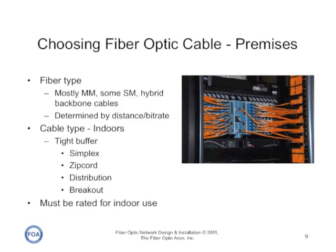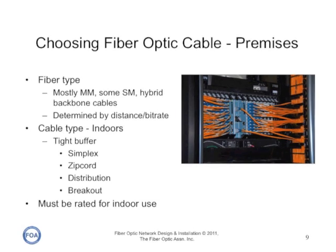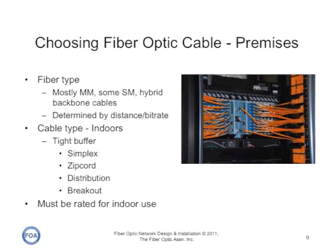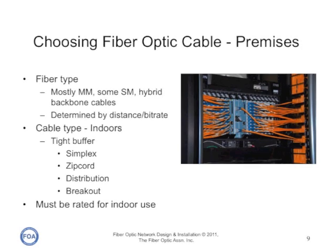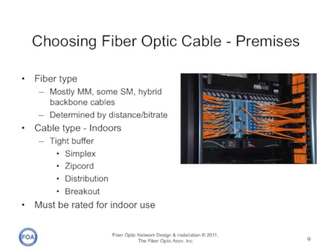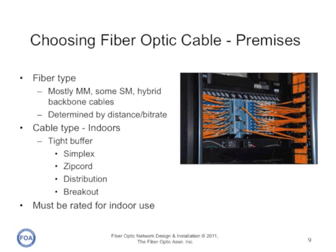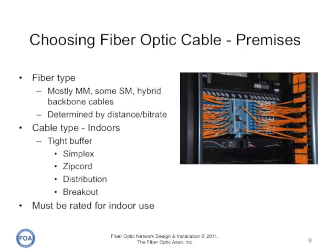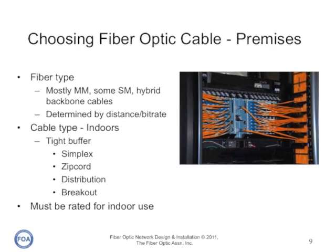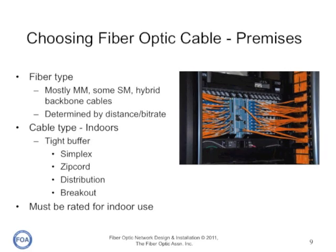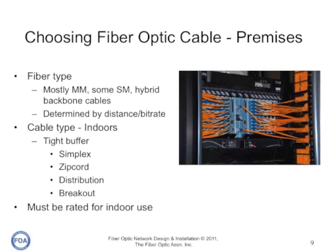For premises cabling, with the exception of telco central offices, most of the cabling is multi-mode, but some single mode is used for backbones and local area networks. We often recommend installing hybrid backbone cables — some multi-mode, some single mode — so that you have both fibers available. The single mode is good for future high bandwidth applications.